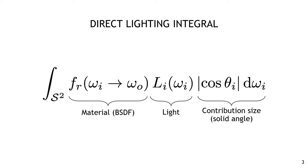When it's formulated as an integral over the hemisphere, the direct lighting integral is made up of three terms: the material scattering function, the incoming light, and the contribution or solid angle. We're going to solve this integral using Monte Carlo estimation by evaluating random samples of the integrand and averaging the results.